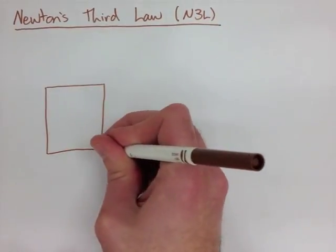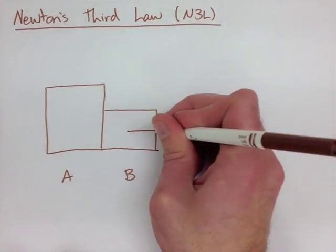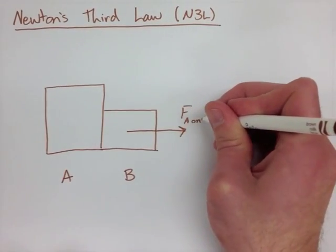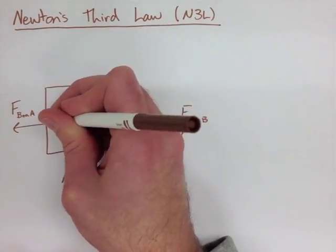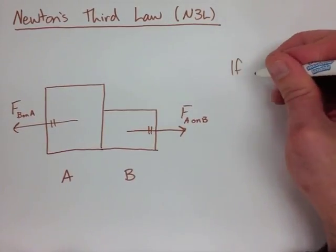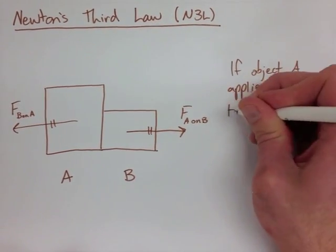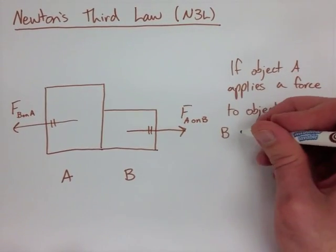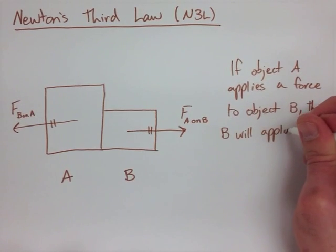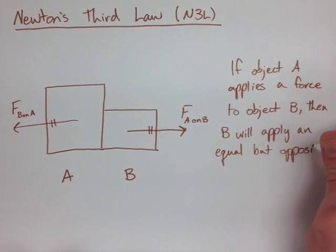Imagine we have two objects, object A and object B. Object B is being pushed by object A, but object A is also being pushed by object B. What Newton's Third Law says is if object A applies a force to object B, then object B is applying an equal force, but in the opposite direction, to object A.